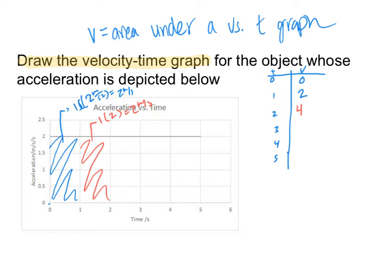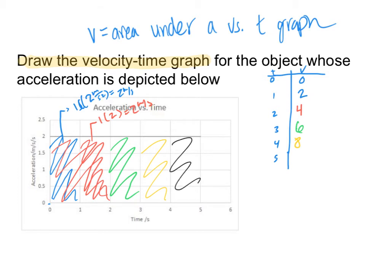Alternatively, you can find the total area under the graph up to that time point, which gives the same result. Between 2 and 3 seconds the velocity becomes 6, between 3 and 4 seconds it becomes 8, and between 4 and 5 seconds it reaches 10 meters per second. Those are two different methods — breaking into chunks or finding total area — both give the same answer. The next step is to graph these values.